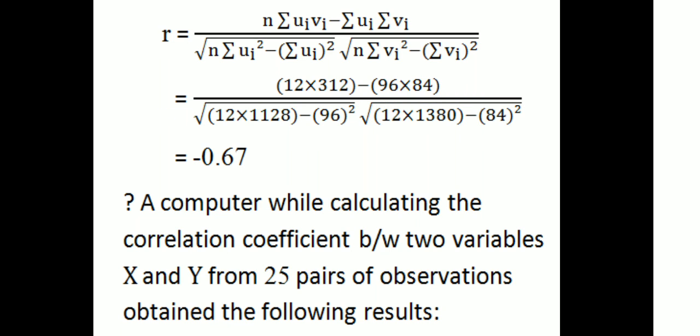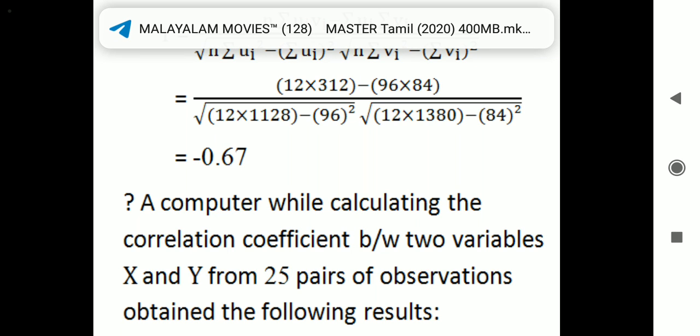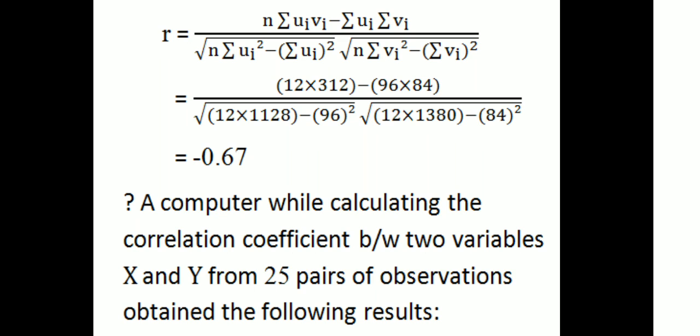Substituting: numerator is 12 into 312 minus 96 into 84. Denominator is square root of [12 into 1128 minus 96-squared] times [12 into 1380 minus 84-squared]. The calculated result gives a correlation coefficient of approximately -0.6. The correlation coefficient lies in the range minus 1 to plus 1, and here we have a negative correlation.